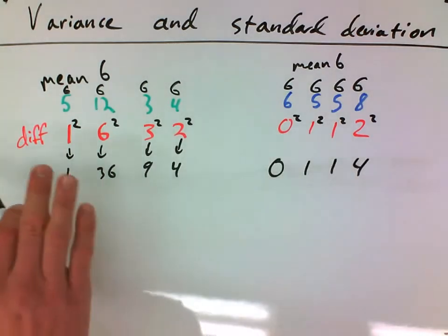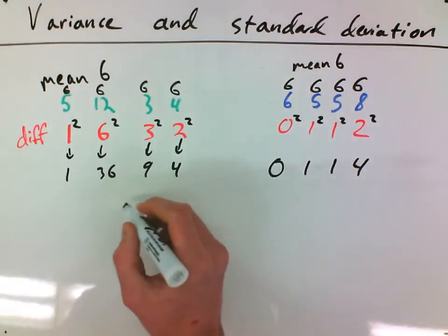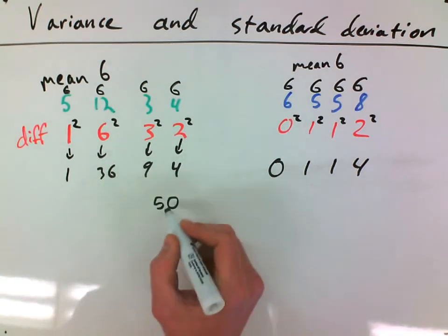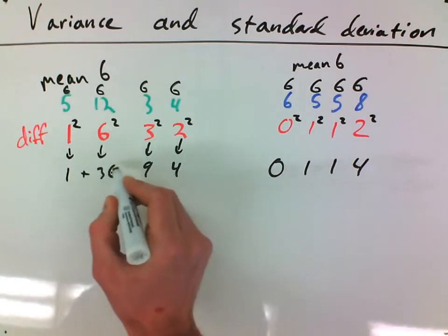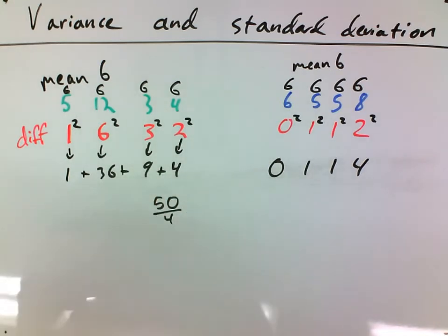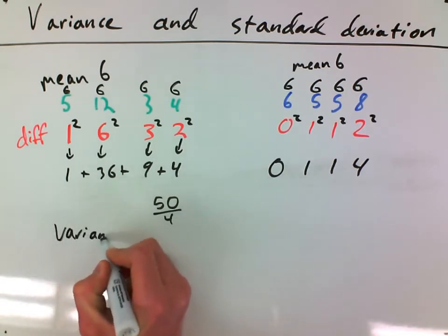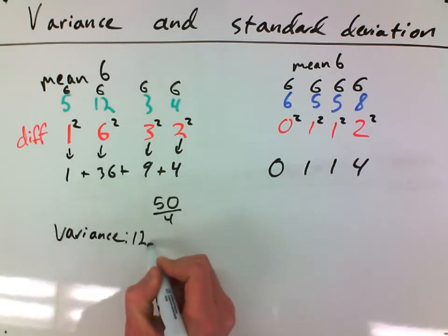So to find variance, basically you take the differences, you square them, and now I'm going to add them all up and find the average of those numbers. So on the left side we've got 1, 36, 9, and 4. Add these all up and I get 50. And I'm going to divide that by 4, which will get me a variance of 12.5.